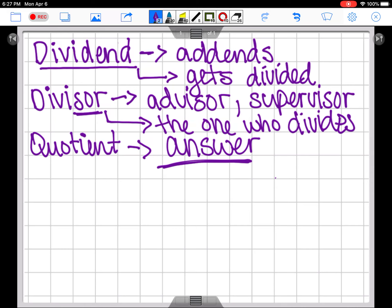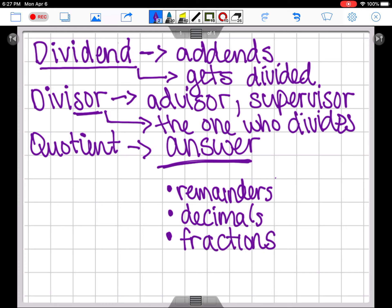We have a lot of options with our quotients. So some things to keep in mind that your quotient might have remainders. It might have decimals. In the future, it will even have fractions. All in addition to our whole numbers.